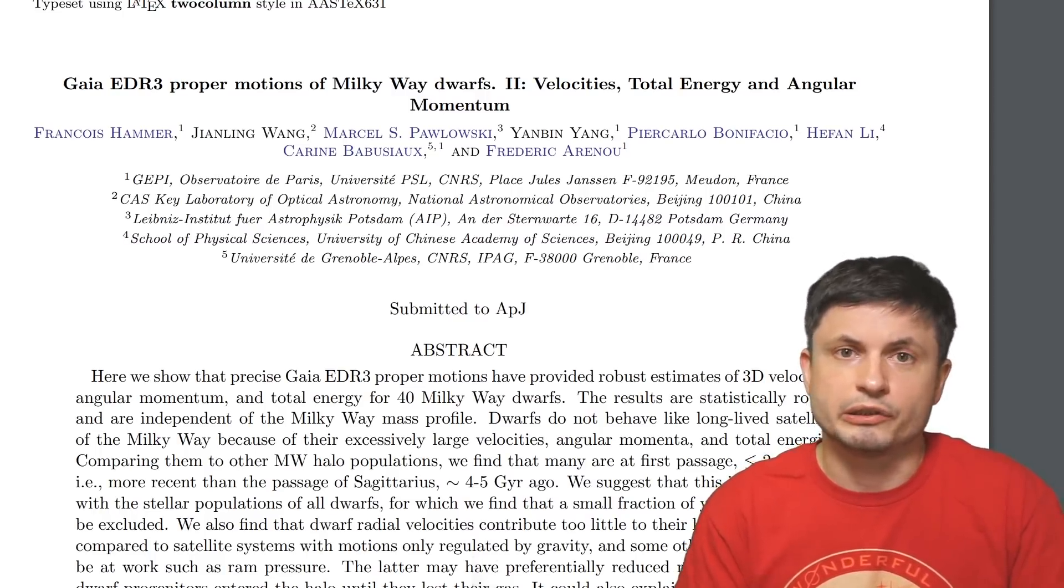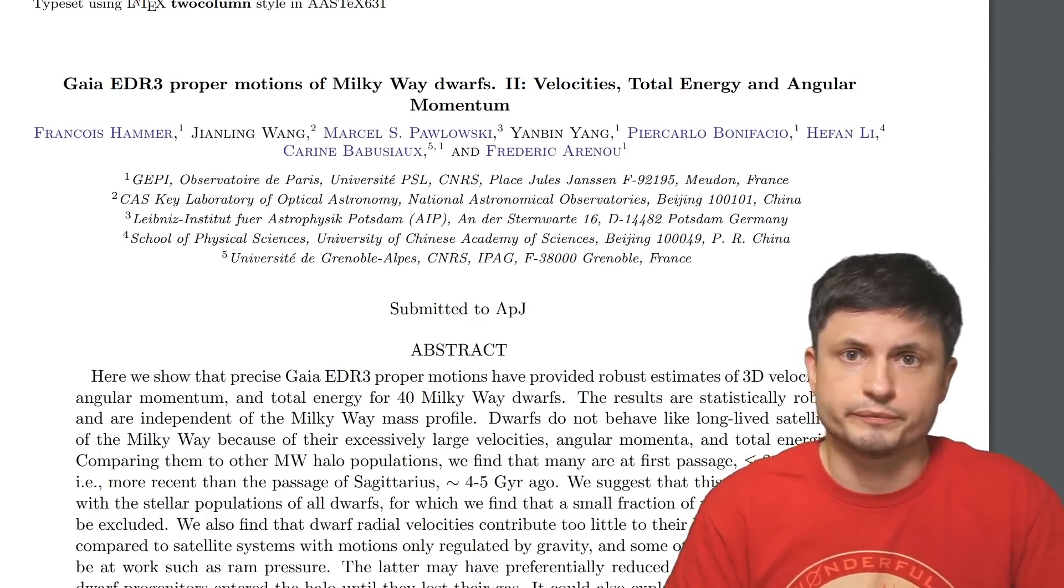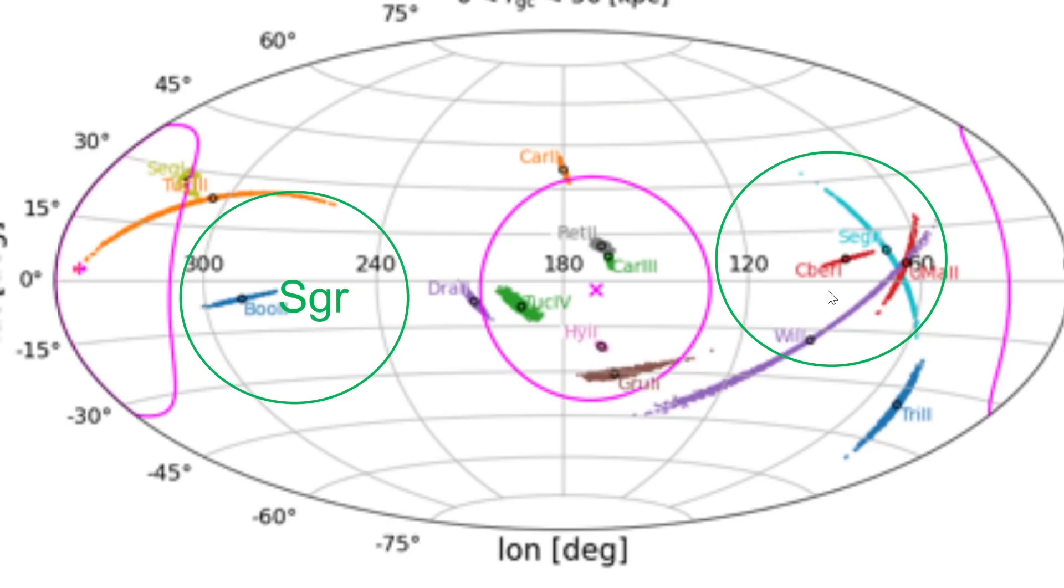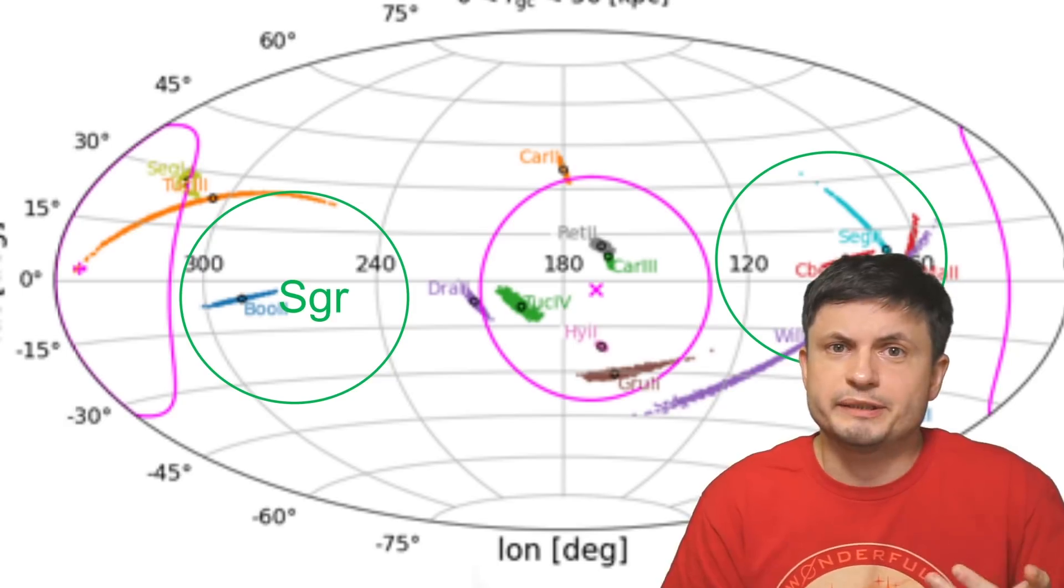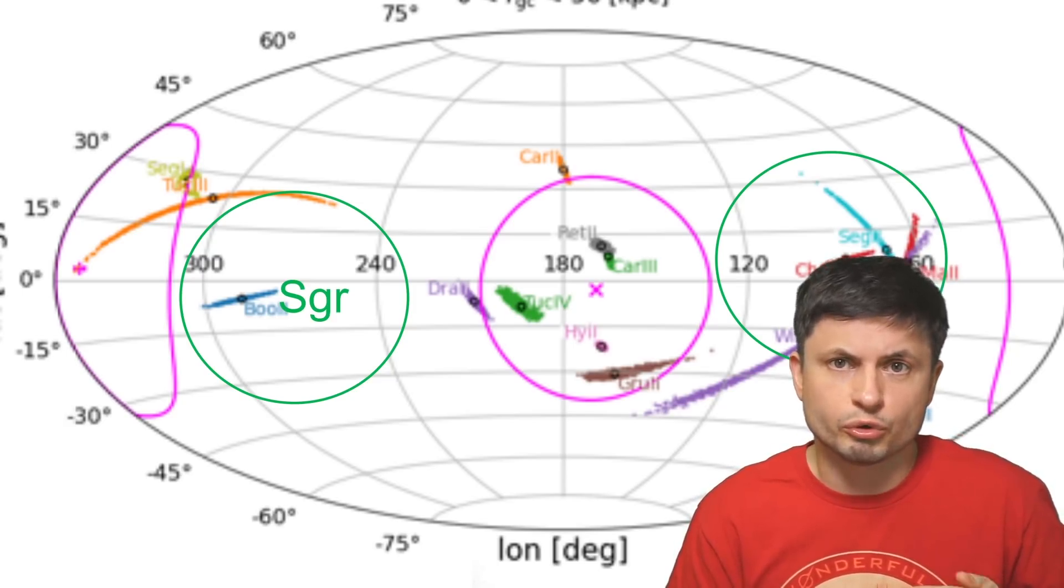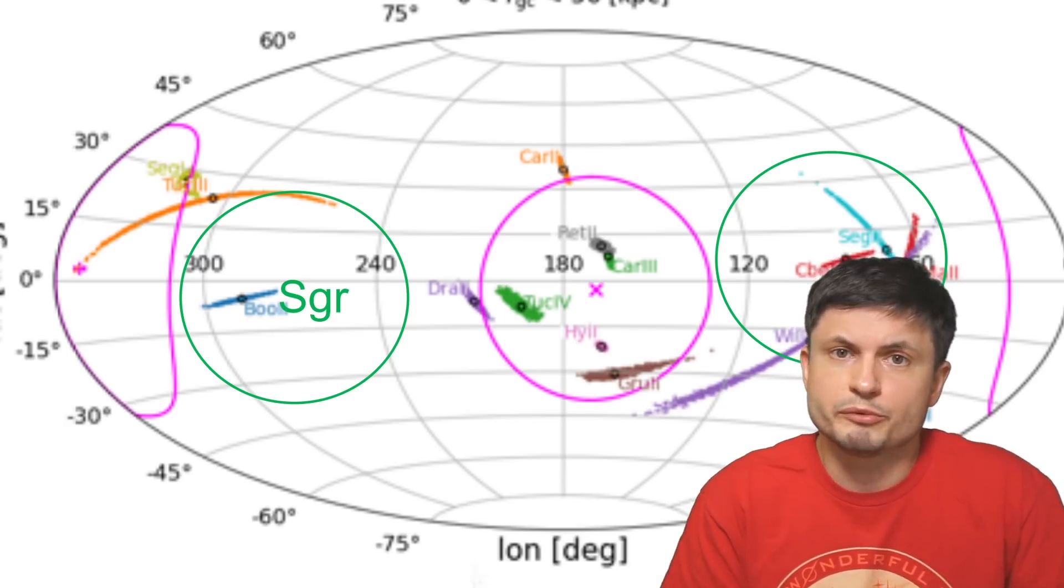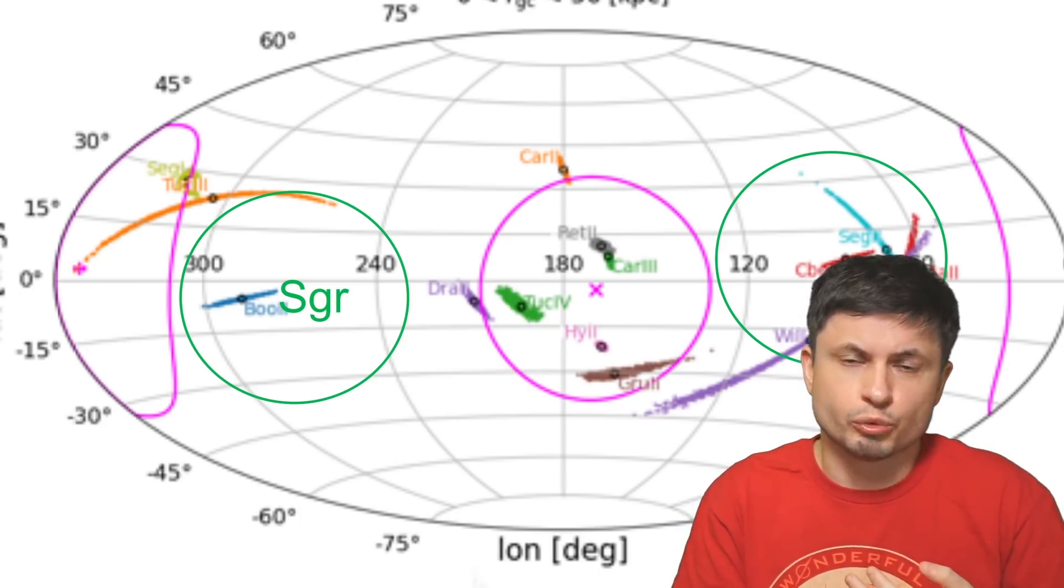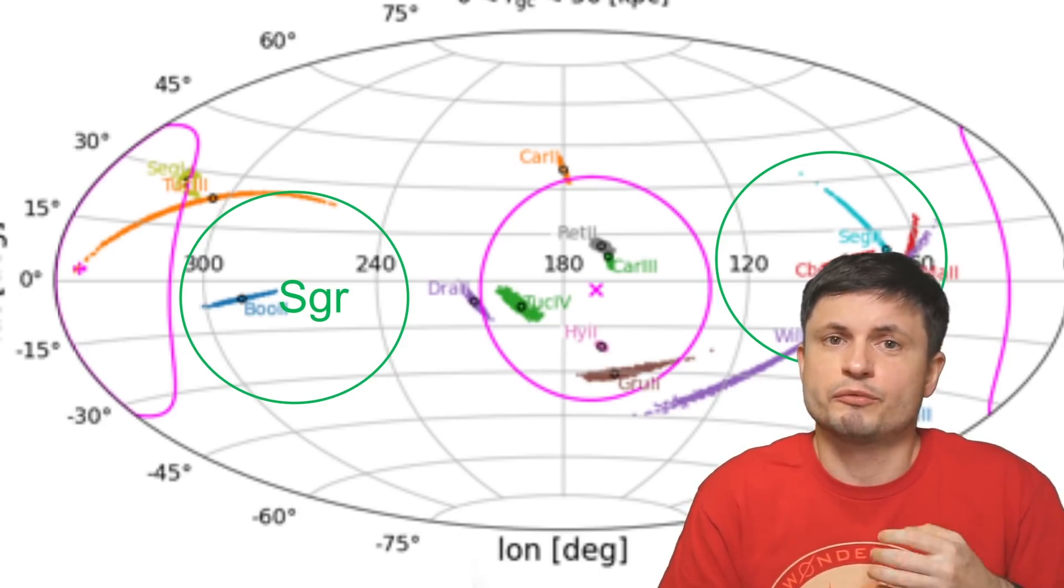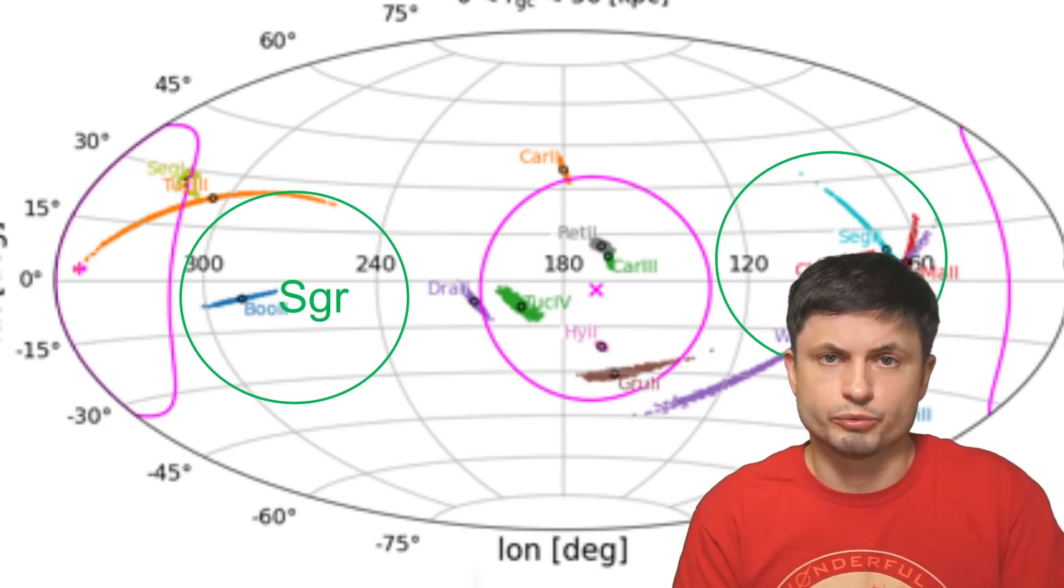But this new study also identified another structure or another region, which is sort of seen here and also here, that the scientists refer to as Sagittarius polar structure, SPOS. And this seems to represent about 20% of all dwarf galaxies, with a lot of them sharing the orbit with Sagittarius dwarf galaxy, or at least coming from the same region of space as Sagittarius dwarf.